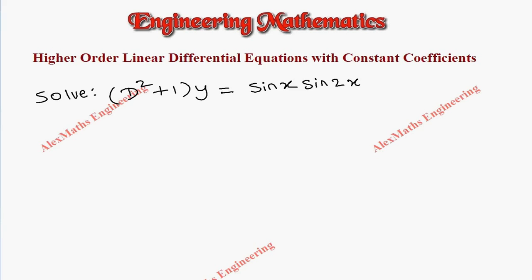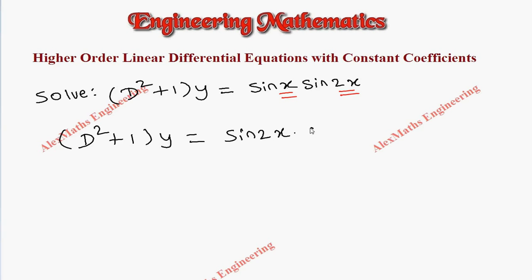Hi students, this is Alex here. In this video we are going to solve a problem. The question is (D² + 1)y = sin x · sin 2x. Let's rewrite the question. Since we have a product of two trigonometric terms, it is better to write the higher coefficient term first, so we write it as sin 2x · sin x.